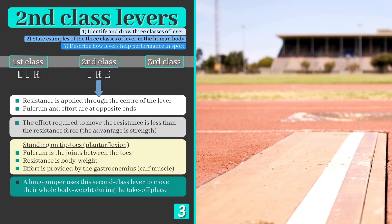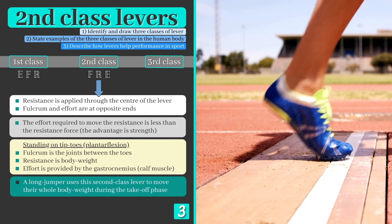During a long jump, this second class lever allows the athlete to move their entire body weight by plantar flexing at the ankle joint at takeoff.